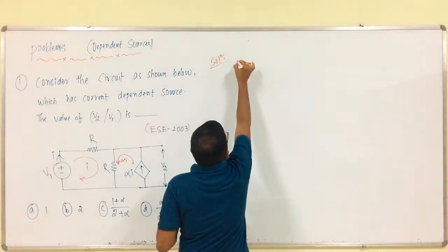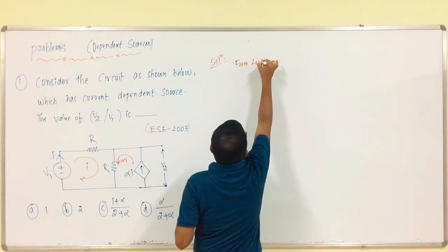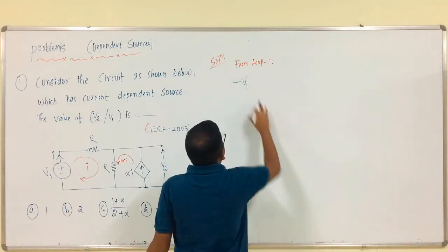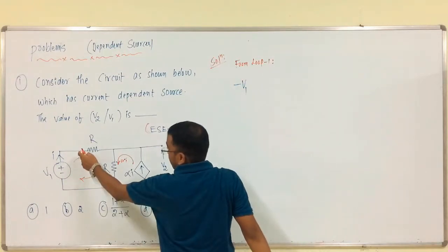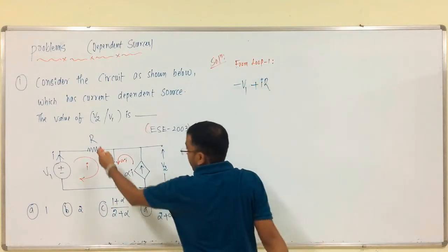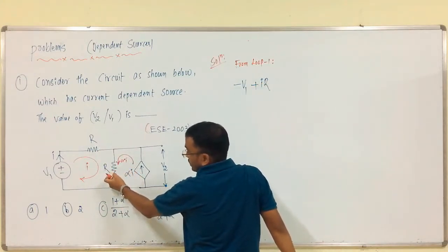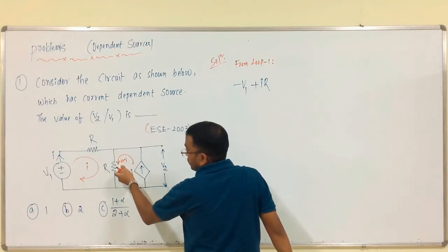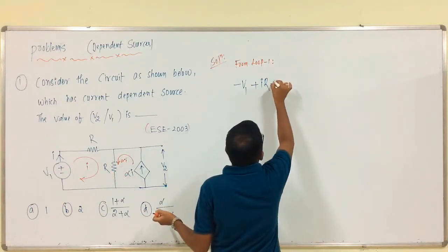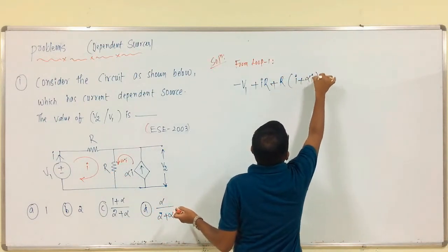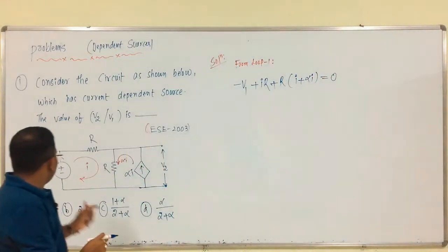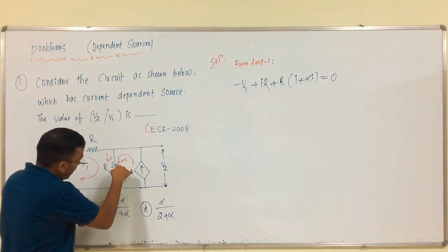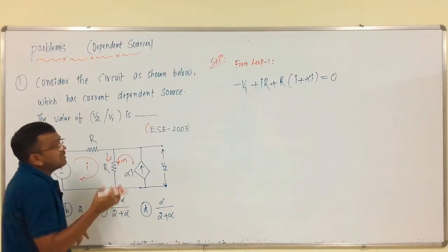From loop 1, starting from this: minus V1, plus I into R. Coming to this branch — this branch is present between loop 1 and loop 2. We are writing with respect to loop 1. See the current direction: I plus alpha I through this branch, that is plus R into (I plus alpha I), which equals 0. The current I plus alpha I into R is nothing but the voltage drop.